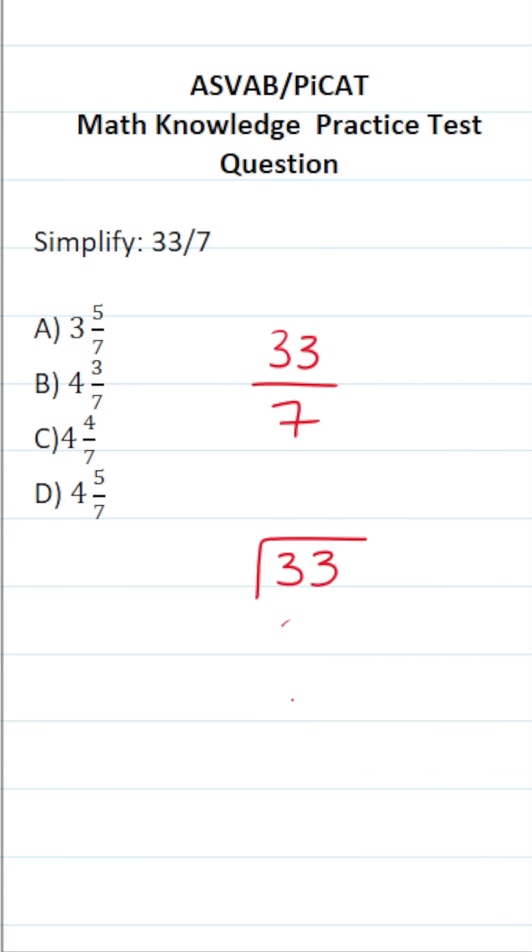So I can read this improper fraction as 33 divided by 7. How many times does 7 go into 33 without going over? That's going to be 4 times, given that 7 times 4 is 28.